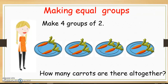How many carrots are there all together? Well, we know there are two carrots on each plate, so we can count in groups of two to find out how many carrots there are all together. Two, four, six, eight. There are eight carrots all together.